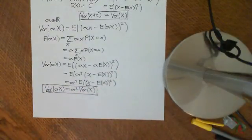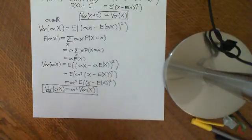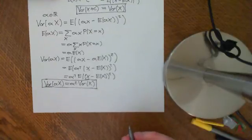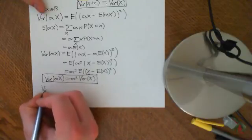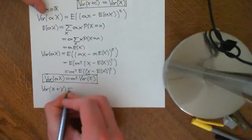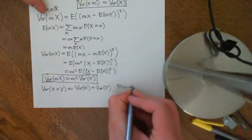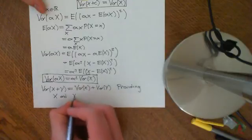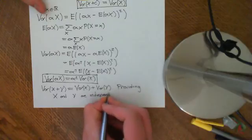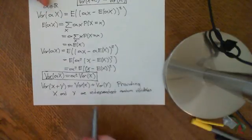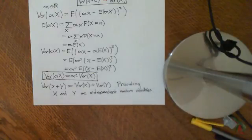There is a final really important property of variance, which we are not going to prove just yet — we will prove it later on. But we need it now because we'll use it when working out the variance of the binomial distribution. The property is that the variance of X plus Y equals the variance of X plus the variance of Y, providing X and Y are independent random variables. We will use this fact to find the variance of the binomial and Poisson distributions.